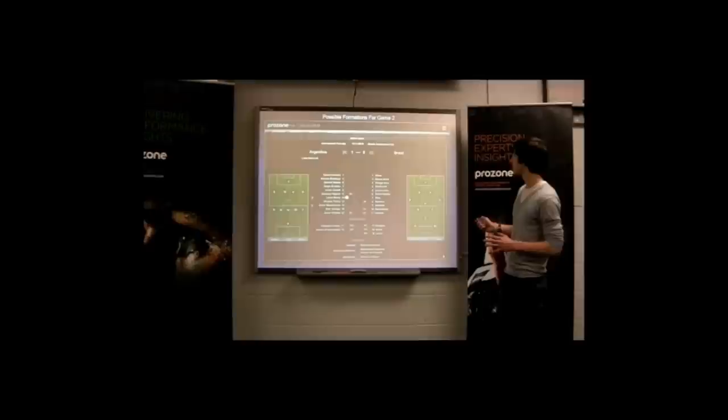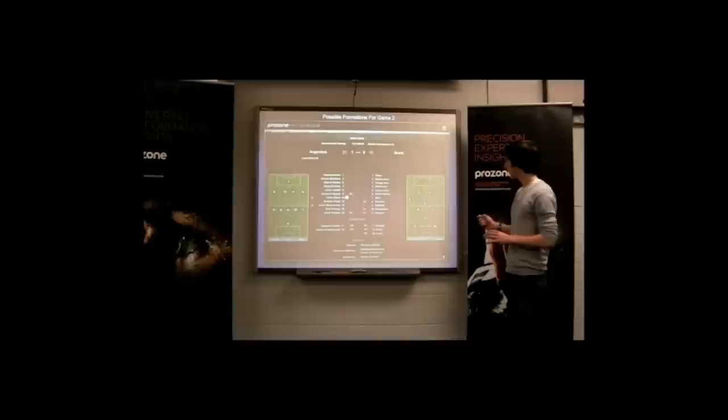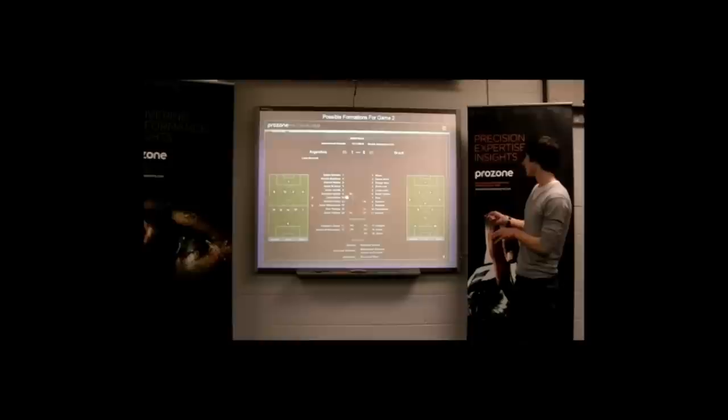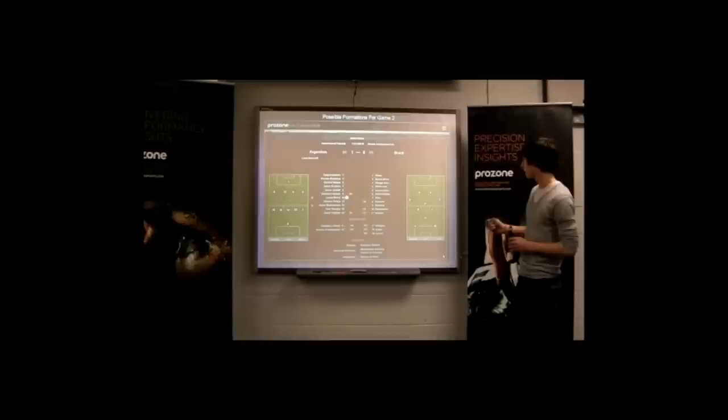From this, we thought of a formation that they could perhaps change to. Still having four at the back, but the two sort of wing-backs being further forward. So when they're attacking, it becomes sort of a 2-6-2, with these staying as far forward as possible.